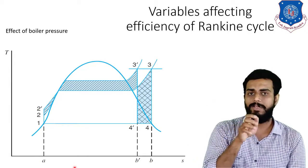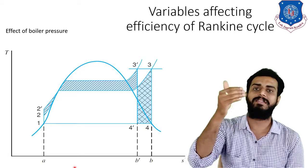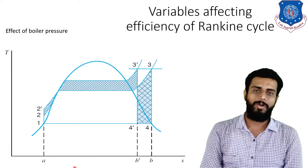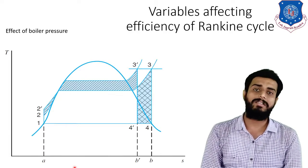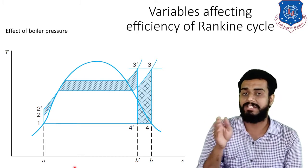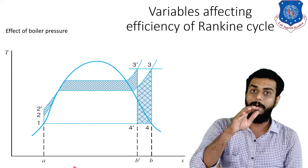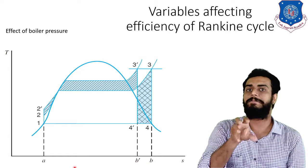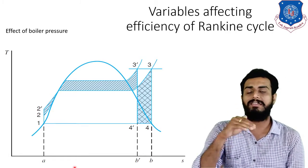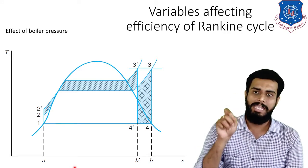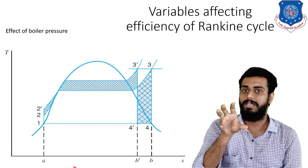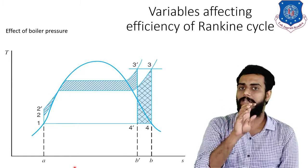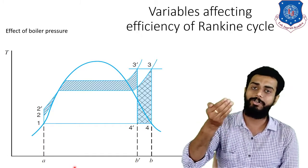Observe the diagram: the hatched portion shows the increase in net work done, and the cross-hatched portion shows the reduction in net work done. The heat rejection for the original cycle equals area A-1-4-B. For the modified cycle after increasing boiler pressure, the heat rejection becomes area A-1-4'-B'. As you can see, this later area has reduced by some amount. If heat rejection has reduced, that yields an increase in efficiency.